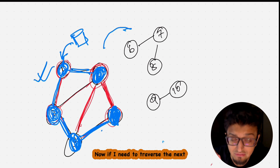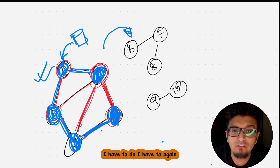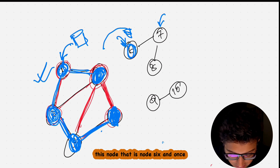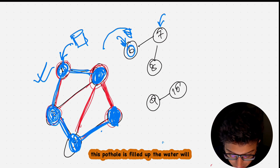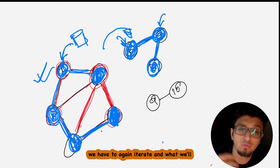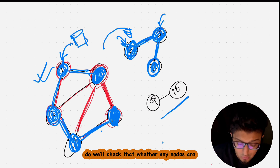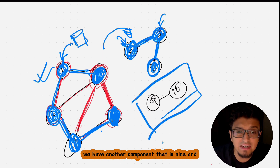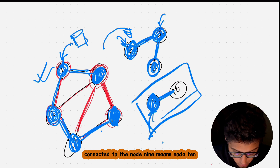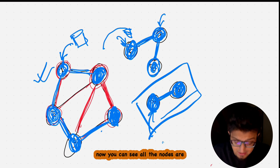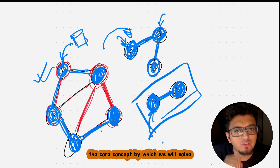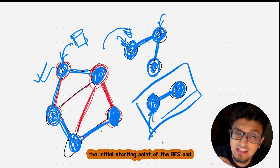To traverse the next component — nodes six, seven, and eight — we pour water into node six. Once node six is filled, water flows through the pipe to fill node seven and then node eight. Then we check for pending nodes and find the third component, nodes nine and ten. Pouring water on node nine fills node ten as well. Now all nodes are visited.